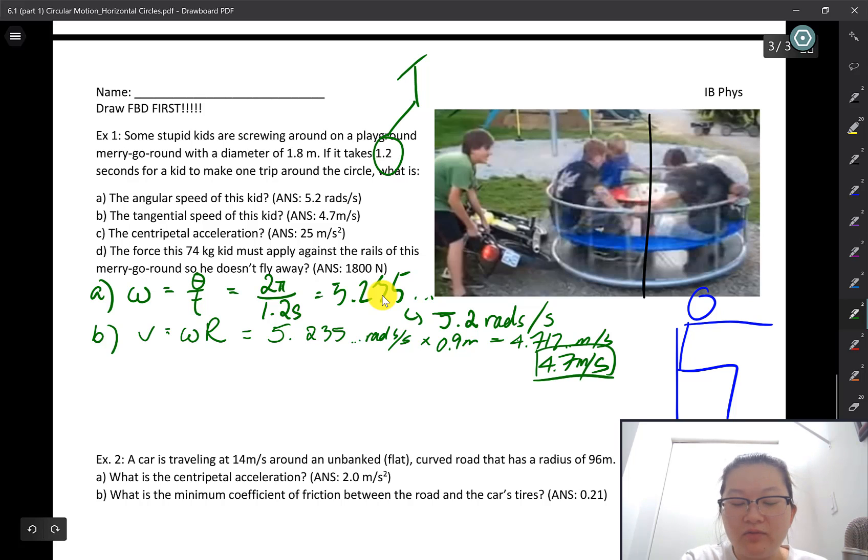Rounded up to two sig figs, 4.7 meters per second. Don't need directions for this one because this is just speed going around anywhere in the circle.